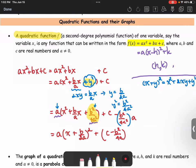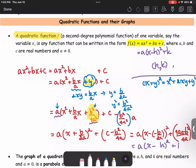And then we can rewrite this in the form a(x - (-b/(2a)))² + (4ac - b²)/(4a). And this is in the form a(x - h)² + k.